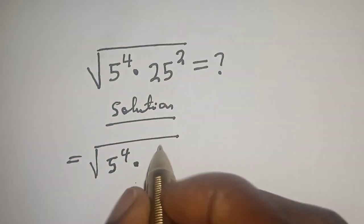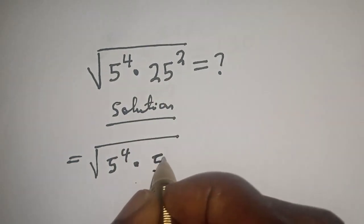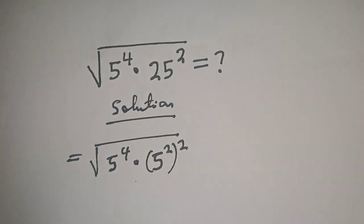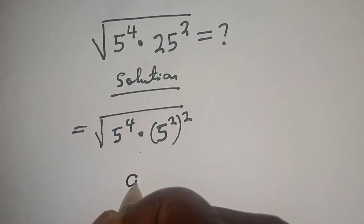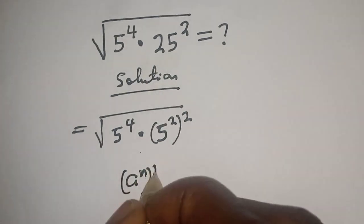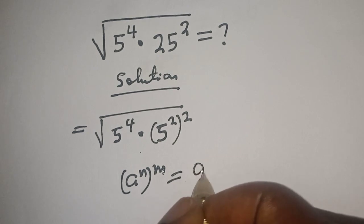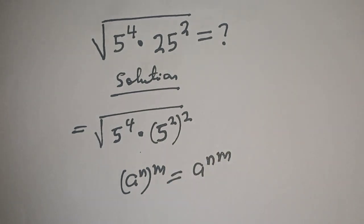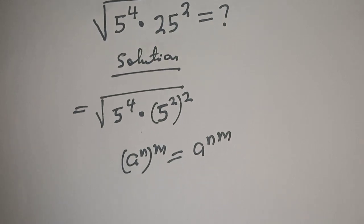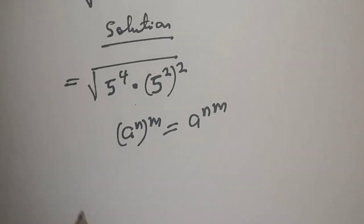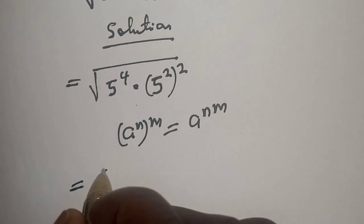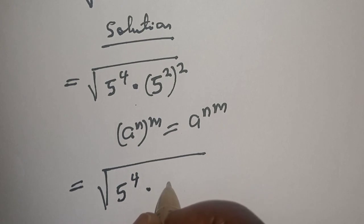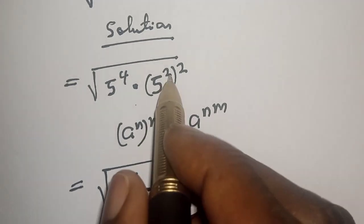Solution: 25 squared is equal to 5 squared raised to the power of 2. Take note of this exponential rule: if you have a raised to power n, to the power of m, this is equal to a raised to power n times m. So we have square root of 5 raised to power 4, multiplied by 5 raised to power 2 times 2, that is 4.